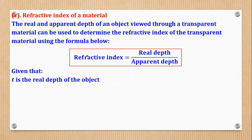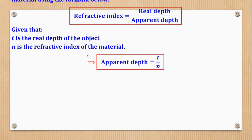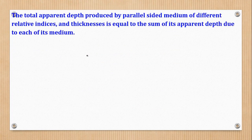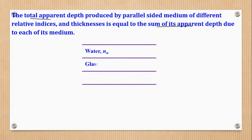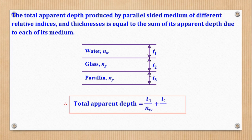What if there is more than one medium arranged parallel to each other? The total apparent depth is the sum of the apparent depth due to each medium. For example, with water of real depth T1, glass of real depth T2, and paraffin of real depth T3, total apparent depth = T1/N1 + T2/N2 + T3/N3.